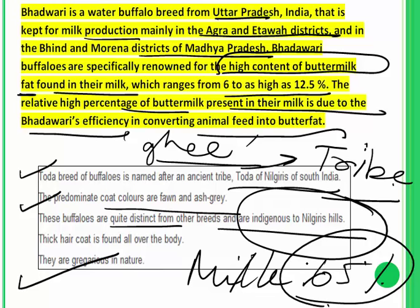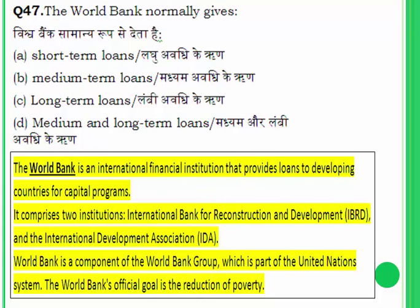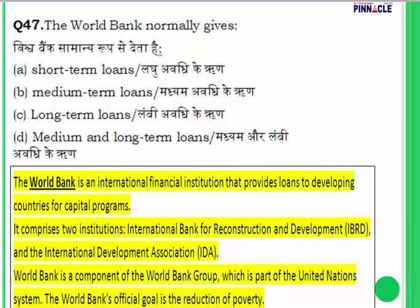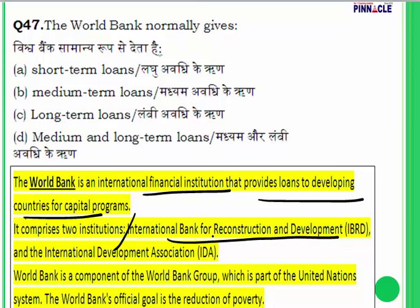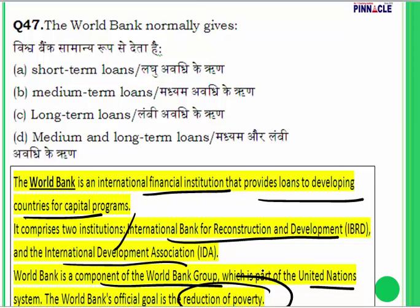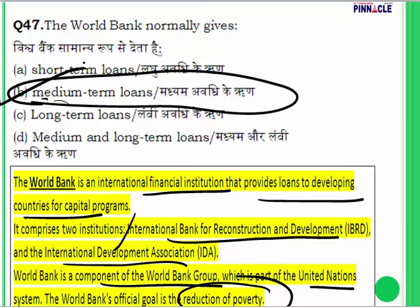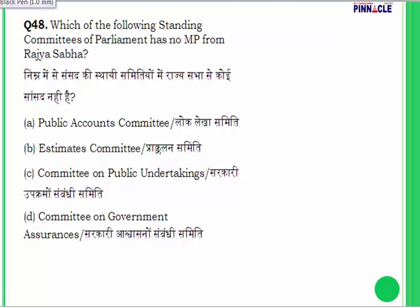Question 47: the World Bank normally gives what kind of loans — short-term, medium-term, long-term, or medium and long-term? The World Bank is an international financial institution providing loans to developing countries for capital programs. It comprises the International Bank for Reconstruction and Development (IBRD) and the International Development Association (IDA), and is part of the United Nations system. Its official goal is reduction of poverty. Answer: B, medium-term loans.